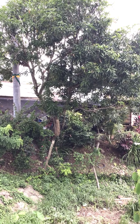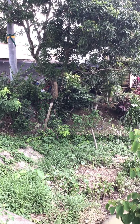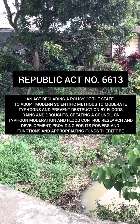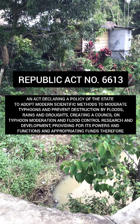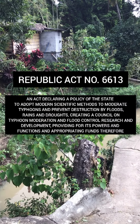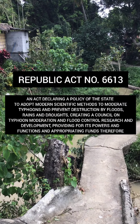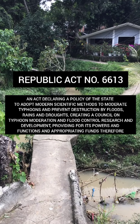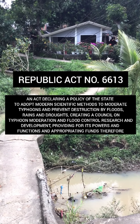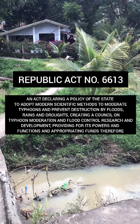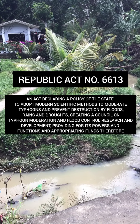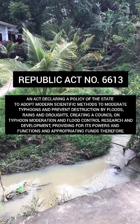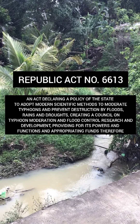Republic Act No. 6613 — An act declaring a policy of the state to adopt modern scientific methods to moderate typhoons and prevent destruction by floods, rains, and droughts. Creating a Council on Typhoon Moderation and Flood Control Research and Development, providing for its powers and functions and appropriating funds, therefore.